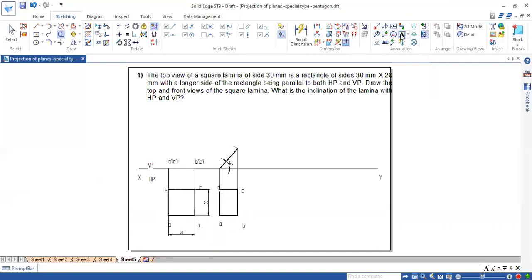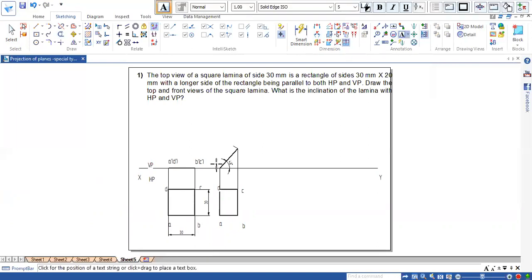Remove the extra projections. So now name it. So this should be A dash in bracket D dash. In bracket. This point should be B dash in bracket C dash. So second position is over.